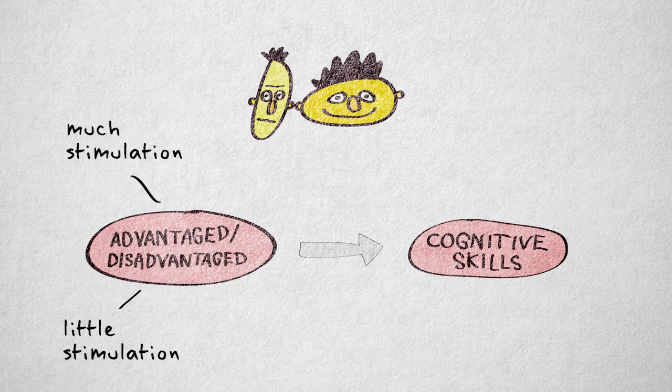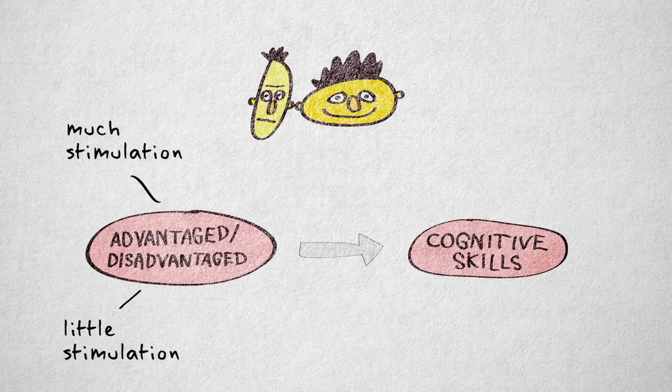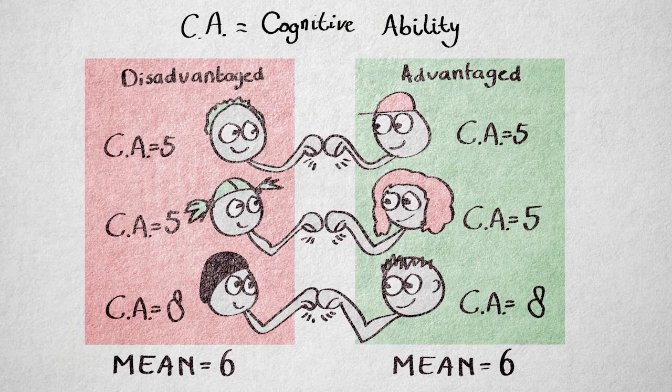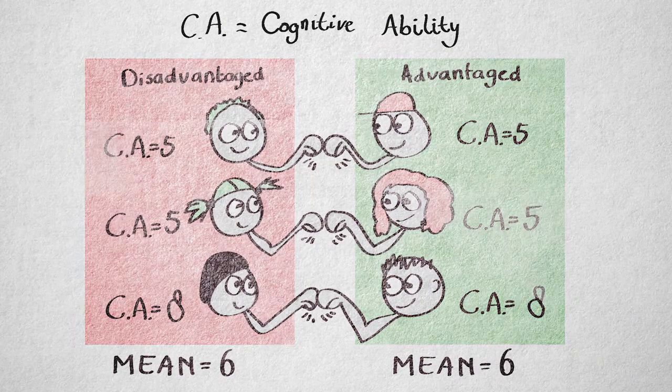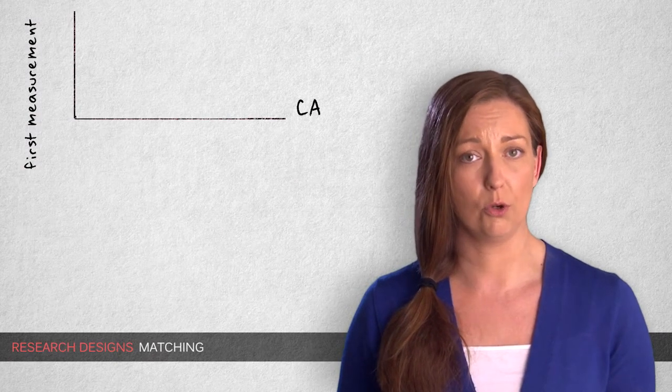If we want to investigate if watching Sesame Street improves cognitive skills differently for disadvantaged versus advantaged children, then it would seem like a good idea to match children at the start of the study in terms of cognitive ability, using a pretest. If we start with groups of equal ability, we can get a good idea of the effect of Sesame Street for both groups.